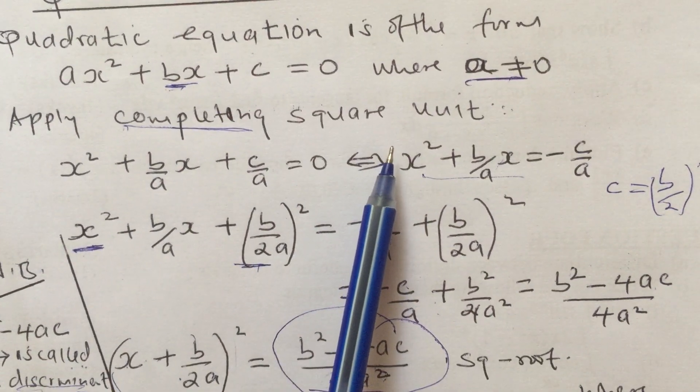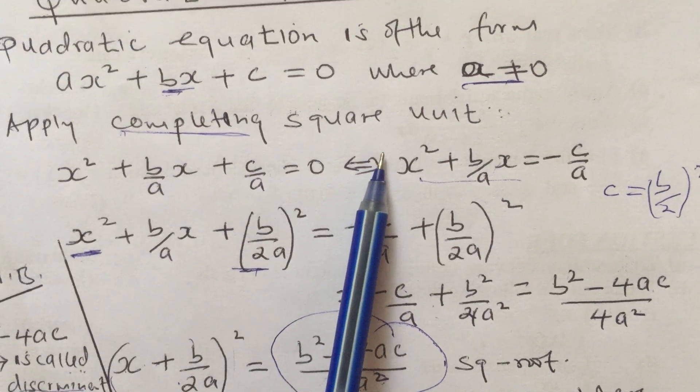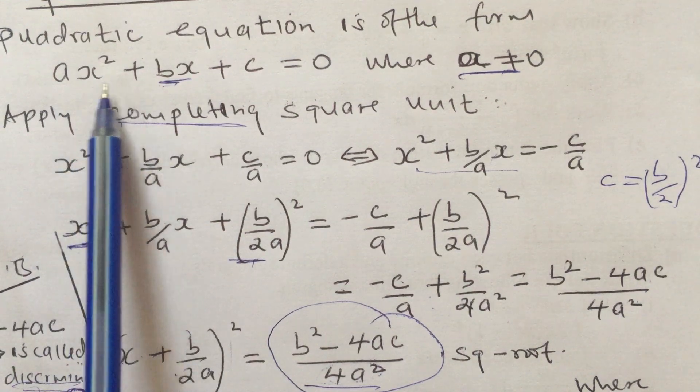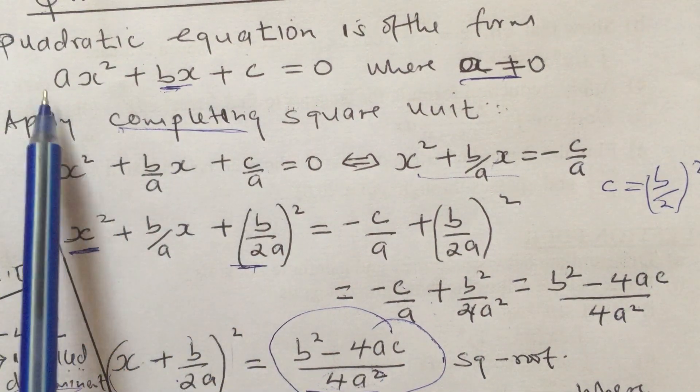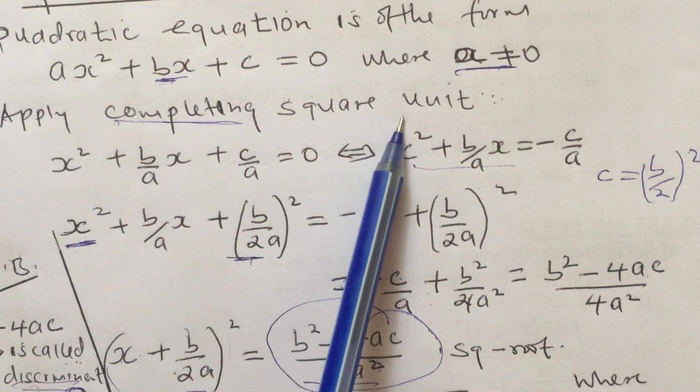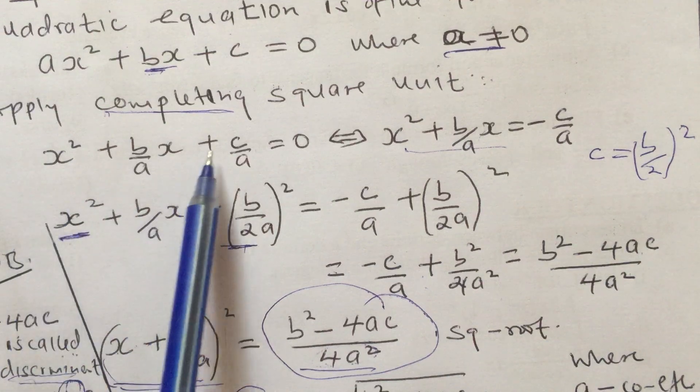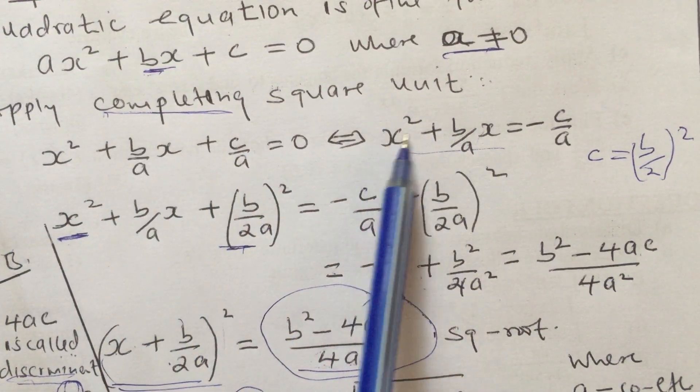In a simple two steps: first of all, make the coefficient a equal to one from this equation by dividing across by a. By doing so, you are getting x² + (b/a)x + (c/a) = 0.